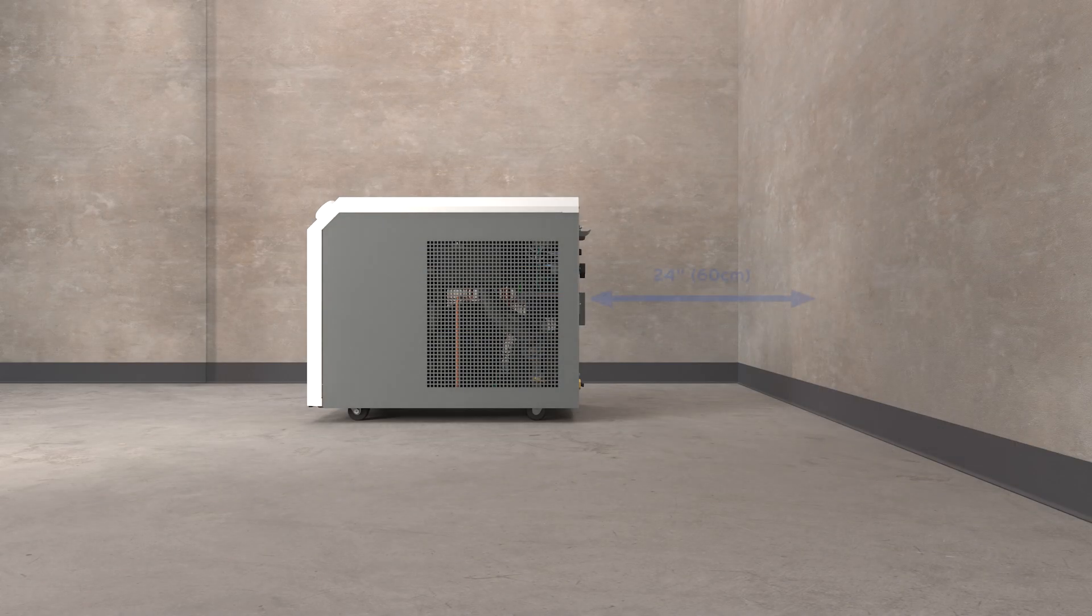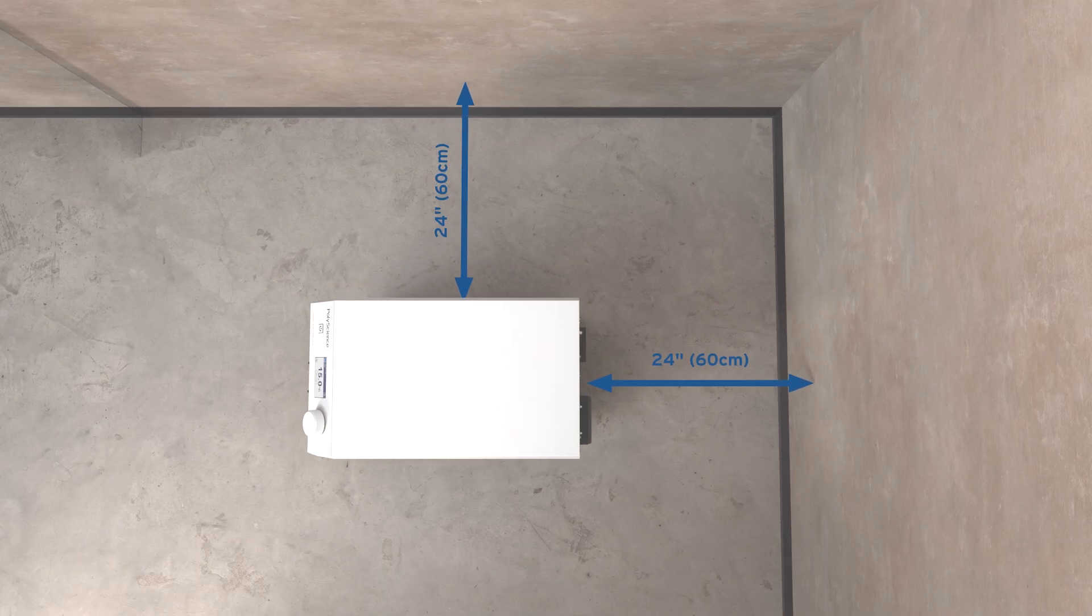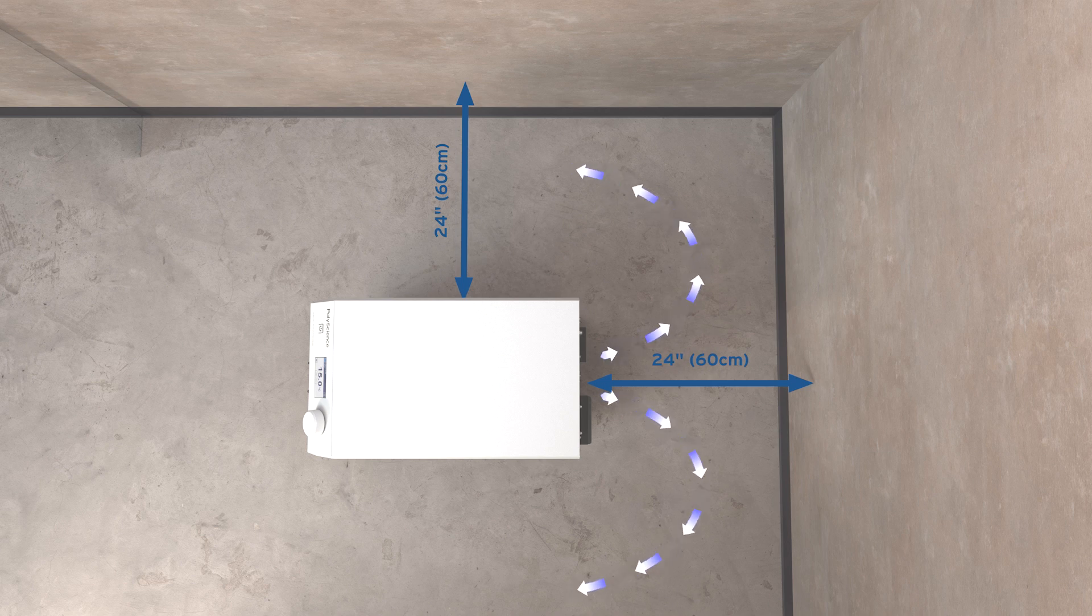Also, check to ensure that the chiller has at least 24 inches of space on all sides to ensure proper airflow.